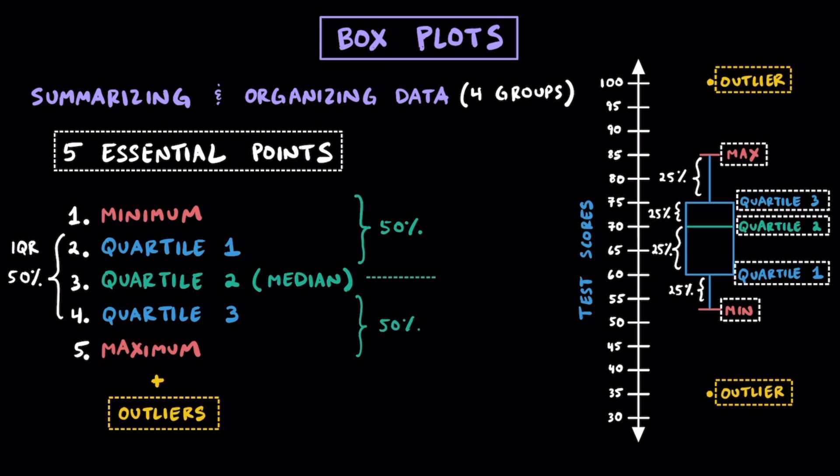Sometimes, when we look at a dataset, we can find these things called outliers. Outliers are just data points or observations that don't quite seem to fit the norm of the rest of the population or the rest of the data. A little bit later in the video, I'll show you how to see if there's going to be an outlier in your dataset or not.